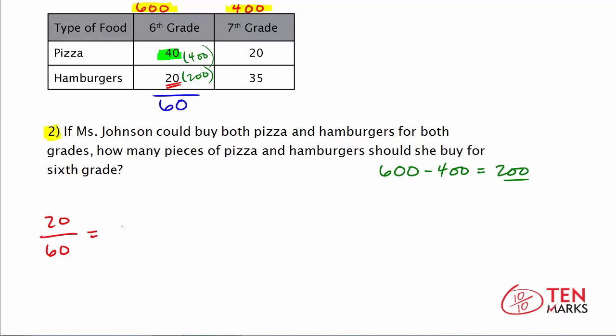20 out of 60 prefer hamburgers. Now when you reduce this fraction, you get down to the simplified fraction of 1 third. Now 1 third can be written as the percentage 33.333 repeating, so 33.3%, and you can round that to 33%. So now you need to find 1 third or 33% of the total sixth grade population.